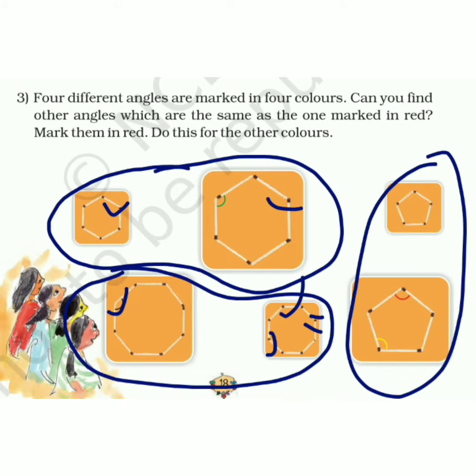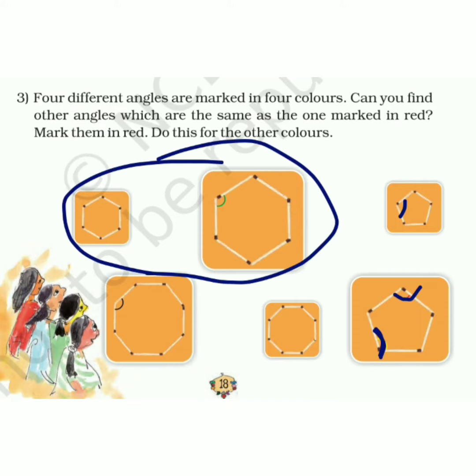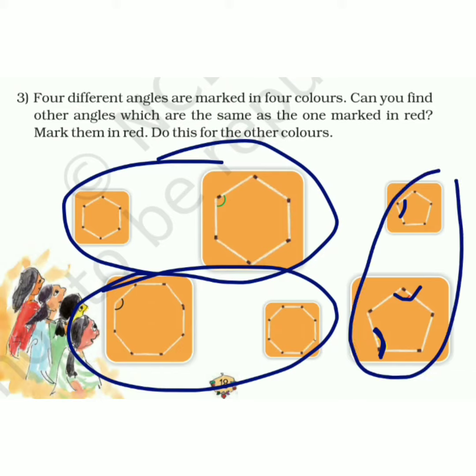Similarly, in this pentagon, this angle is equal to this angle, and this angle is equal to this angle. But sides are different—of this and this and this. In some cases, I select a lot, but angles are the same.